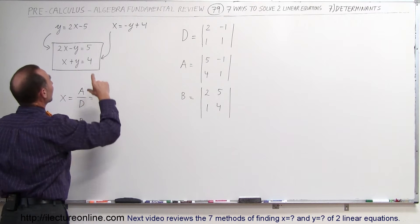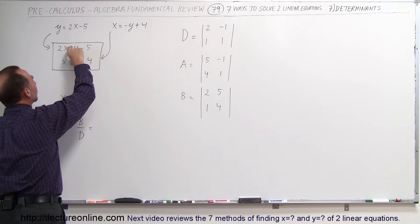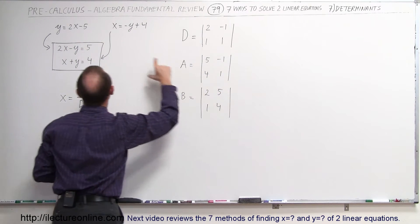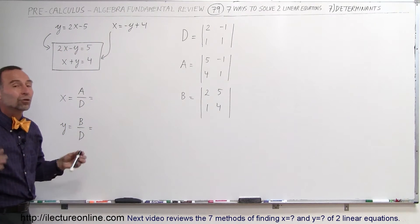And then the third determinant is found by taking the 5 and the 4, the two constants, replacing the coefficients in front of the y's. So the negative 1, 1 become now 5 and 4 and you leave the coefficient from the x alone like that. So those are your three determinants.